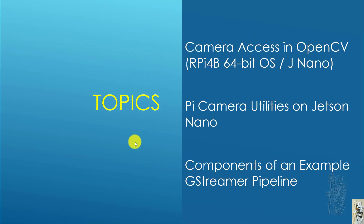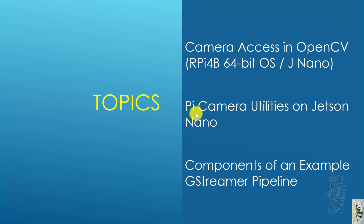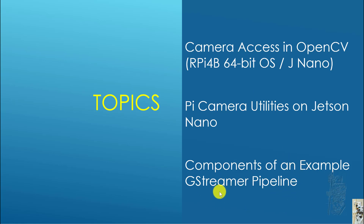The topics we would like to cover: reviewing how to access the camera with OpenCV on the RPi and on the Jetson Nano. Then we'll cover some of the utilities for the Pi camera on the Jetson Nano and how to use those utilities to create components of an example GStreamer pipeline.